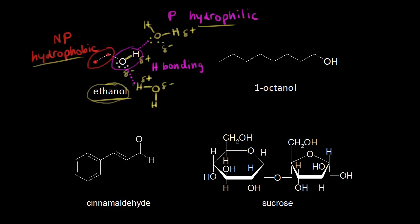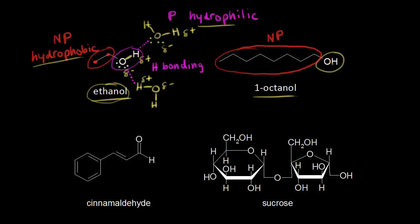If we look at a different molecule — 1-octanol on the right — it also has an OH group with the same opportunity for hydrogen bonding, so it has a polar, hydrophilic region. However, this time there is an extremely large nonpolar hydrophobic portion of the molecule. This nonpolar region overcomes the slightly polar region, making 1-octanol overall nonpolar. So 1-octanol will not dissolve in water — that's a no — whereas ethanol was a yes.